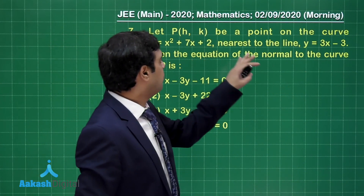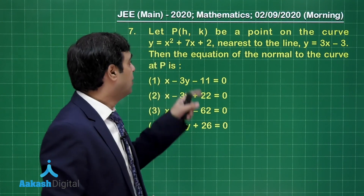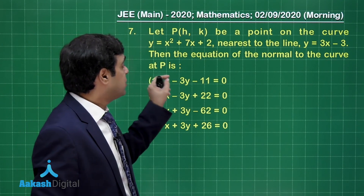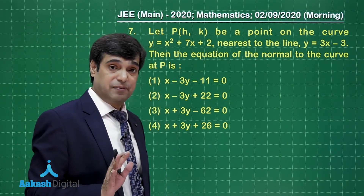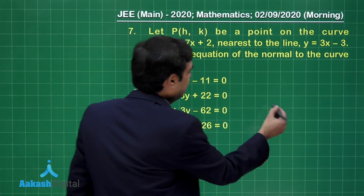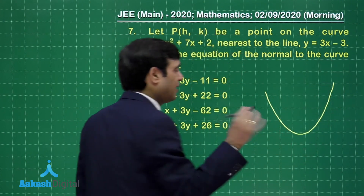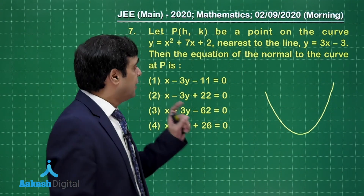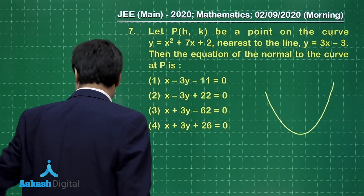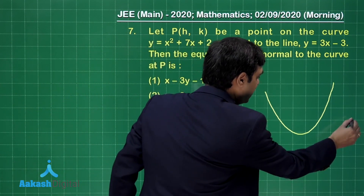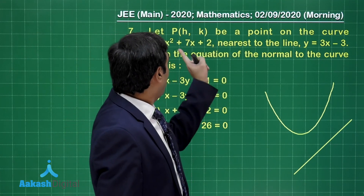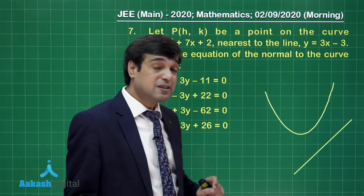Question 7: let P be a point on the given curve — which is clearly a parabola — nearest to the line y = 3x minus 3. Find the equation of the normal to the curve at P. The parabola opens upward. The line is given, and P being nearest to the line means we need the perpendicular from the curve to the line.